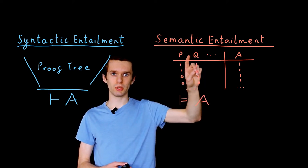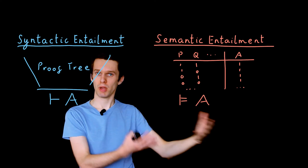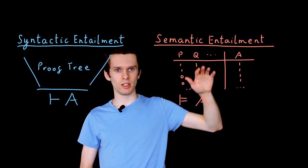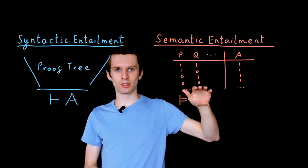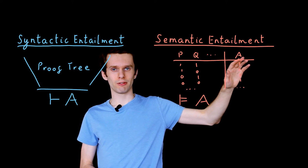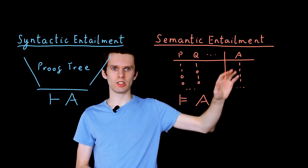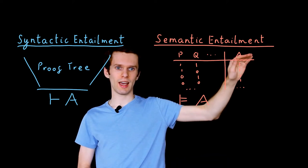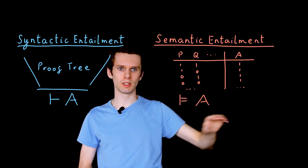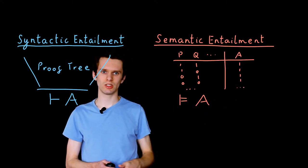So if we have symbols P, Q, R, any other symbols, we can enumerate their true and falsehood values. And if under any of those interpretations, or rather all of those interpretations, A evaluates to true, then we have semantic entailment.